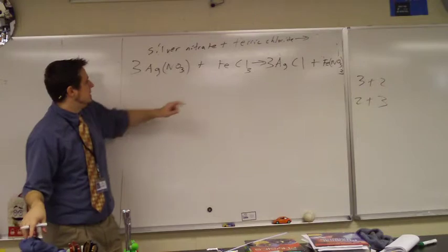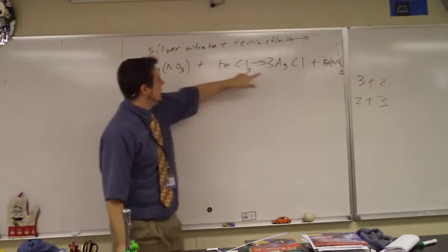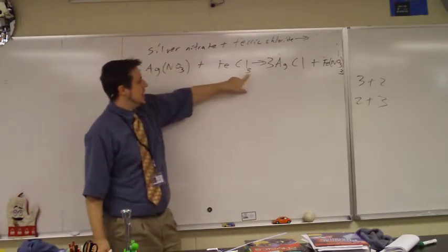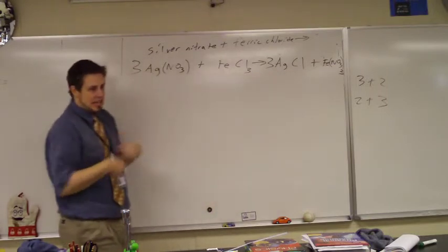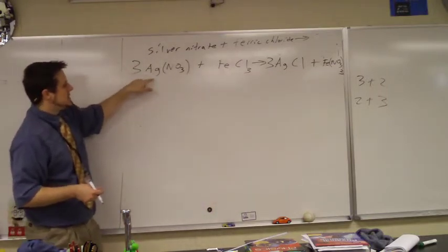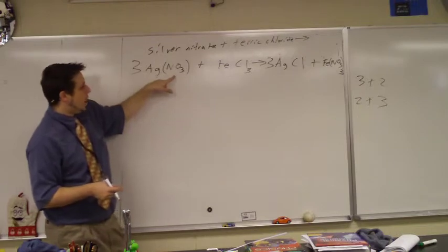What was the one was I on? We've got iron. So we have one and one, chlorine, three and three. Let's go back and check everything one more time. Three silvers, three silvers. One nitrate, oh, I'm sorry, three nitrates, because it's three out front.